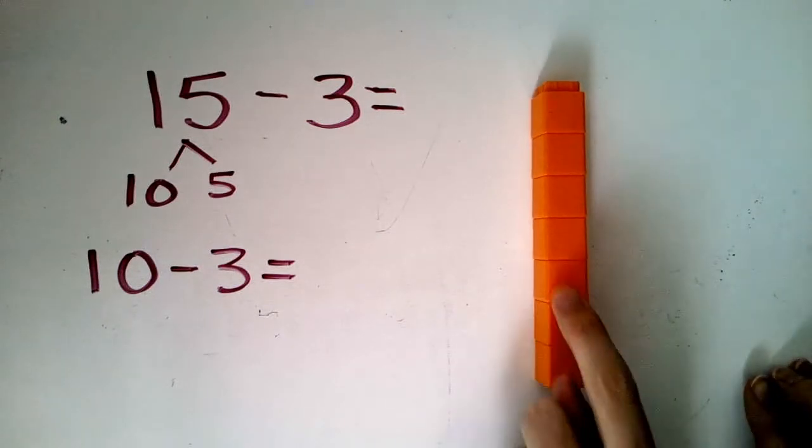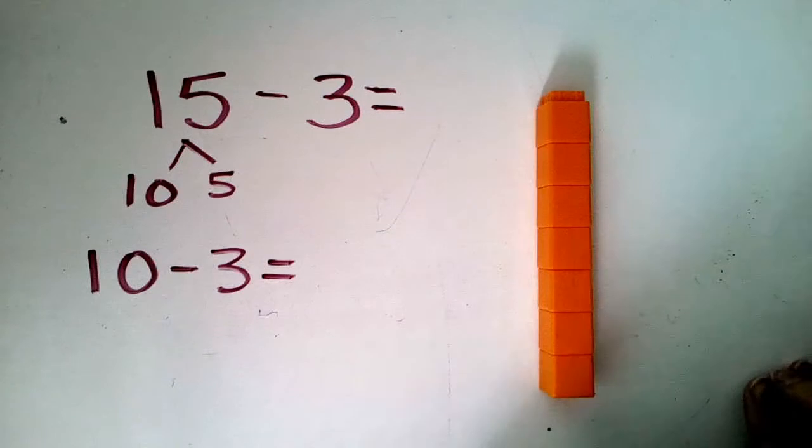If I take my 10 here and take one, two, three away. What are we left with in just my 10 here? One, two, three, four, five, six. We're left with seven.